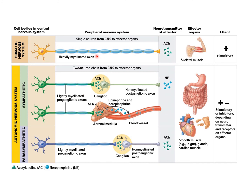The post-ganglionic neuron differs by division. In the sympathetic division, the post-ganglionic neuron releases norepinephrine — sometimes written as E for epinephrine, which is basically the same thing. In the parasympathetic division, the post-ganglionic neuron releases acetylcholine. So the only fiber that releases norepinephrine is the sympathetic post-ganglionic; all other fibers release acetylcholine. And whether it's acetylcholine or norepinephrine at the effector — smooth muscle, cardiac muscle, or glands — these neurotransmitters can be either stimulatory or inhibitory depending on sympathetic or parasympathetic.